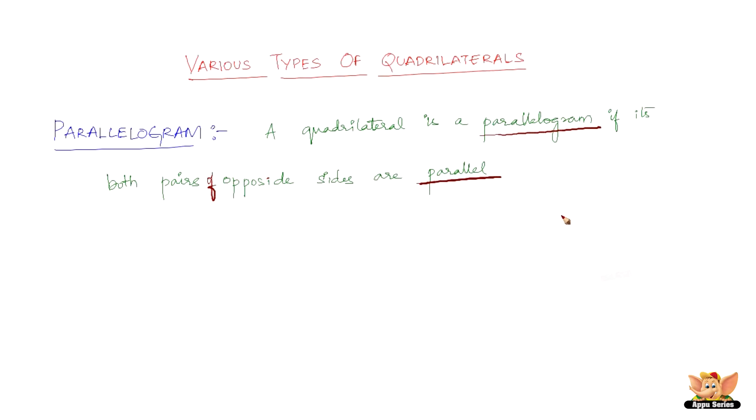It is nothing but a quadrilateral is a parallelogram if its both pairs of opposite sides are parallel. So, say for example, we have a line like this. We need four sides basically to make up a quadrilateral. Here they say both its opposite sides should be parallel.